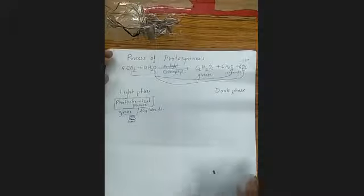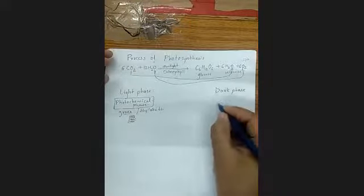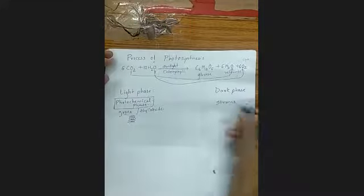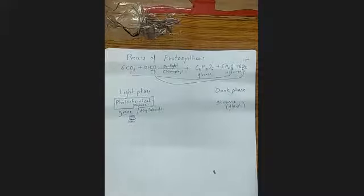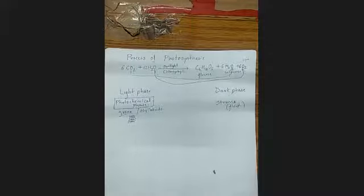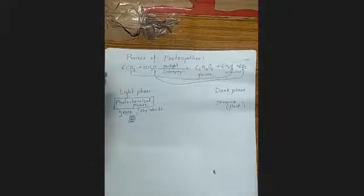In the dark phase, the location is the stroma — the fluid present in the chloroplast. If somebody asks you the location of photosynthesis, the answer should be the chloroplast. But if they ask about particular reactions, you mention that the light phase occurs in the granum, and the dark phase occurs in the stroma of the chloroplast.